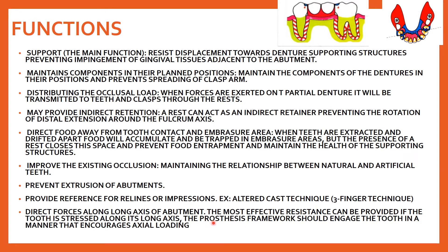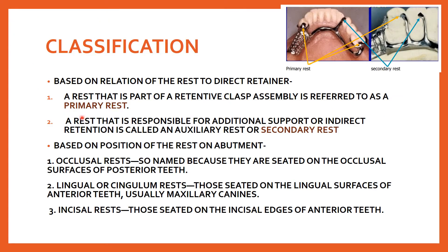Further functions include: improving existing occlusion by maintaining the relationship between natural and artificial teeth; preventing extrusion of the abutments; providing a reference for relining or impression; and directing forces along the long axis of the abutment. Classification based on relation to the direct retainer: if a rest is part of a retentive clasp assembly it is a primary rest; if responsible for additional support or indirect retention, it is called auxiliary or secondary rest.